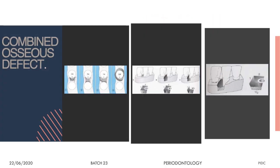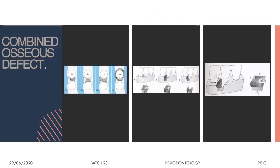A combined osseous defect is a combination of any of these — for example, two walls present with the third wall half present and half absent, or a one-wall defect from the cervical region to the middle third and a three-wall defect from the middle to the apical third, or two walls on one side and three walls on the other side.